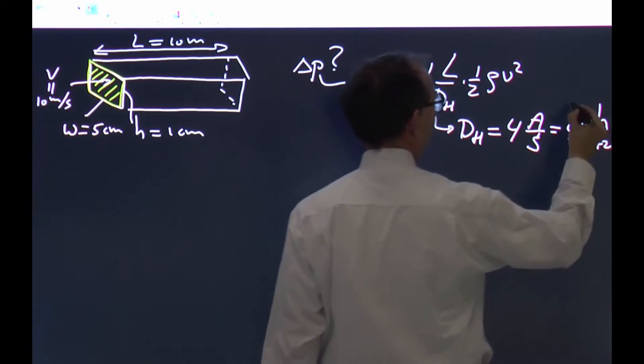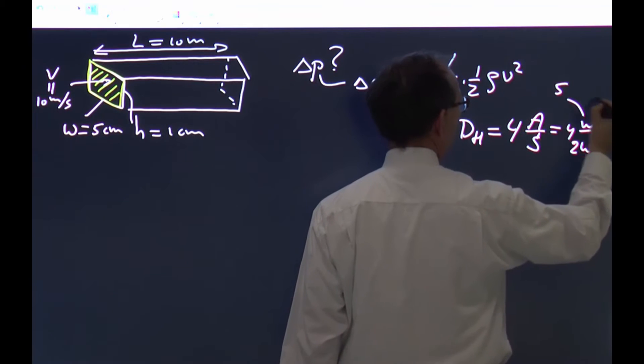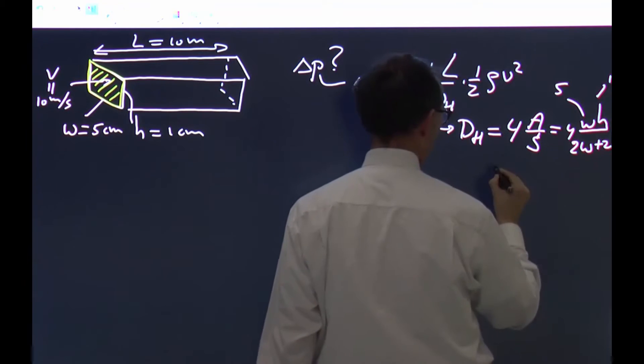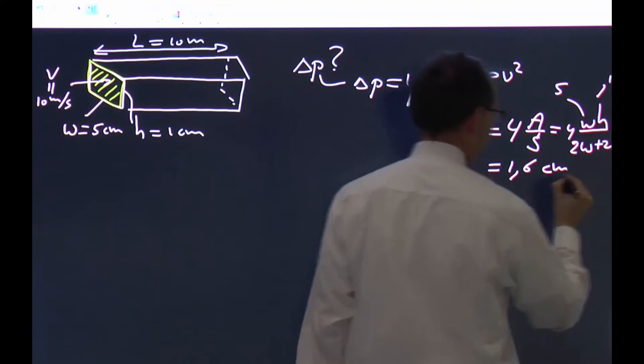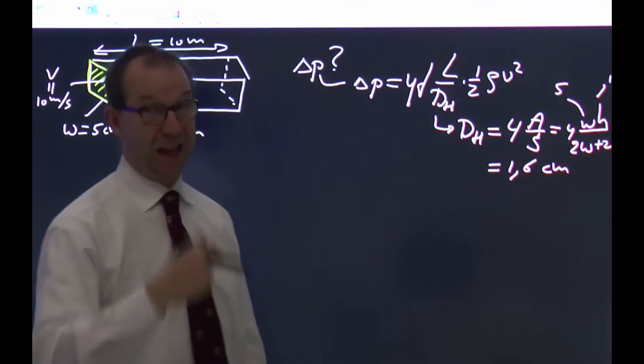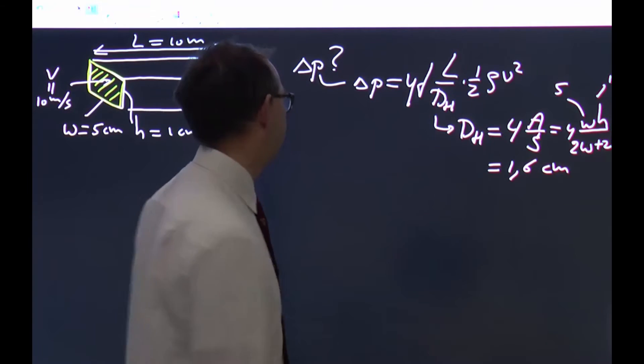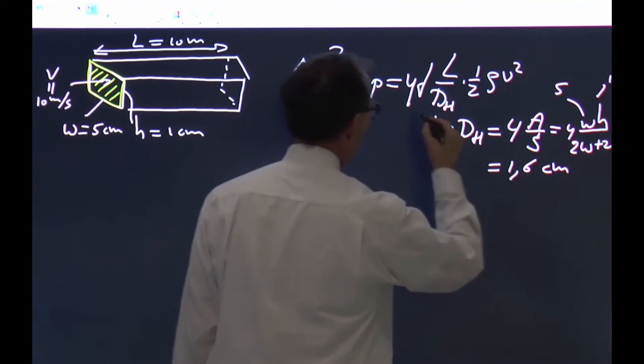We do know both 5 centimeters and 1 centimeter, so if you equate this, you get something like 1.7 centimeter as the hydraulic diameter, as if it's now a tube. Okay, that's part one.